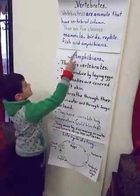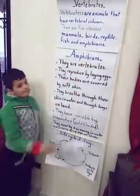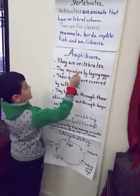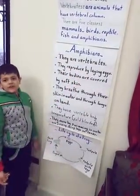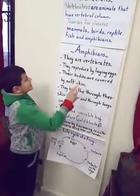There are five classes: mammals, birds, reptiles, fish, and amphibians. We are talking about amphibians.